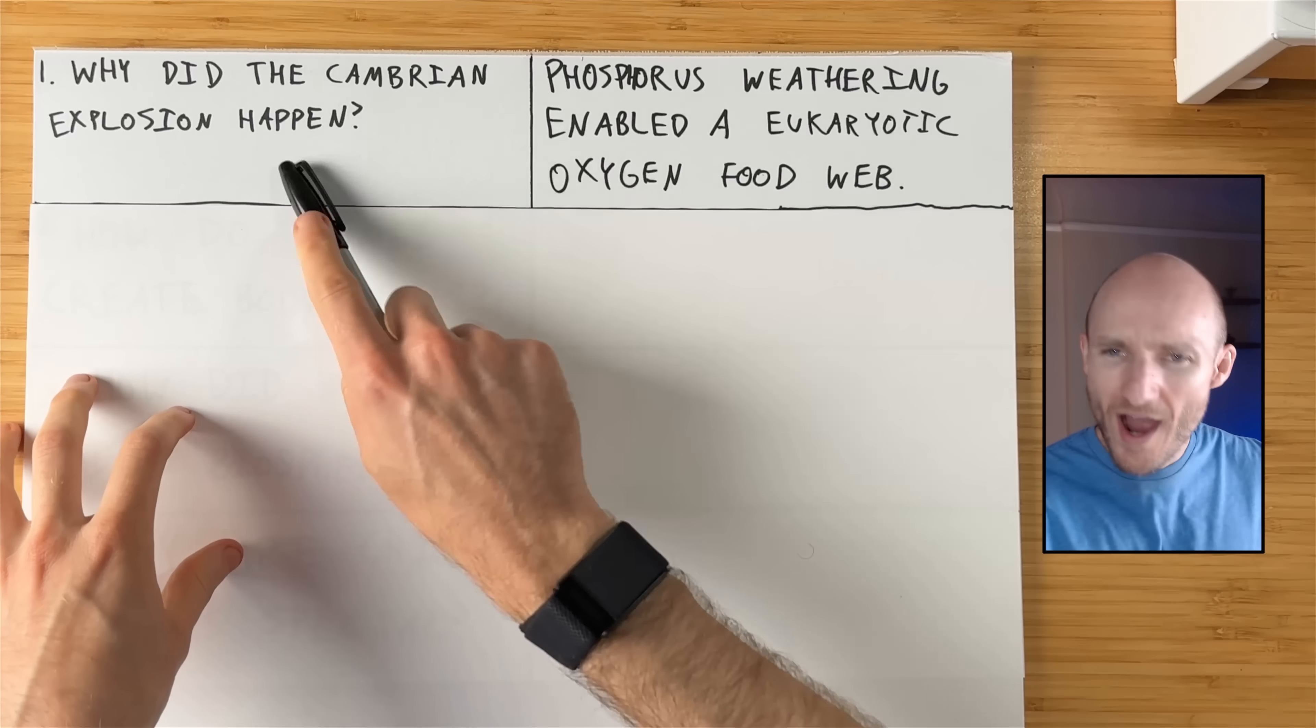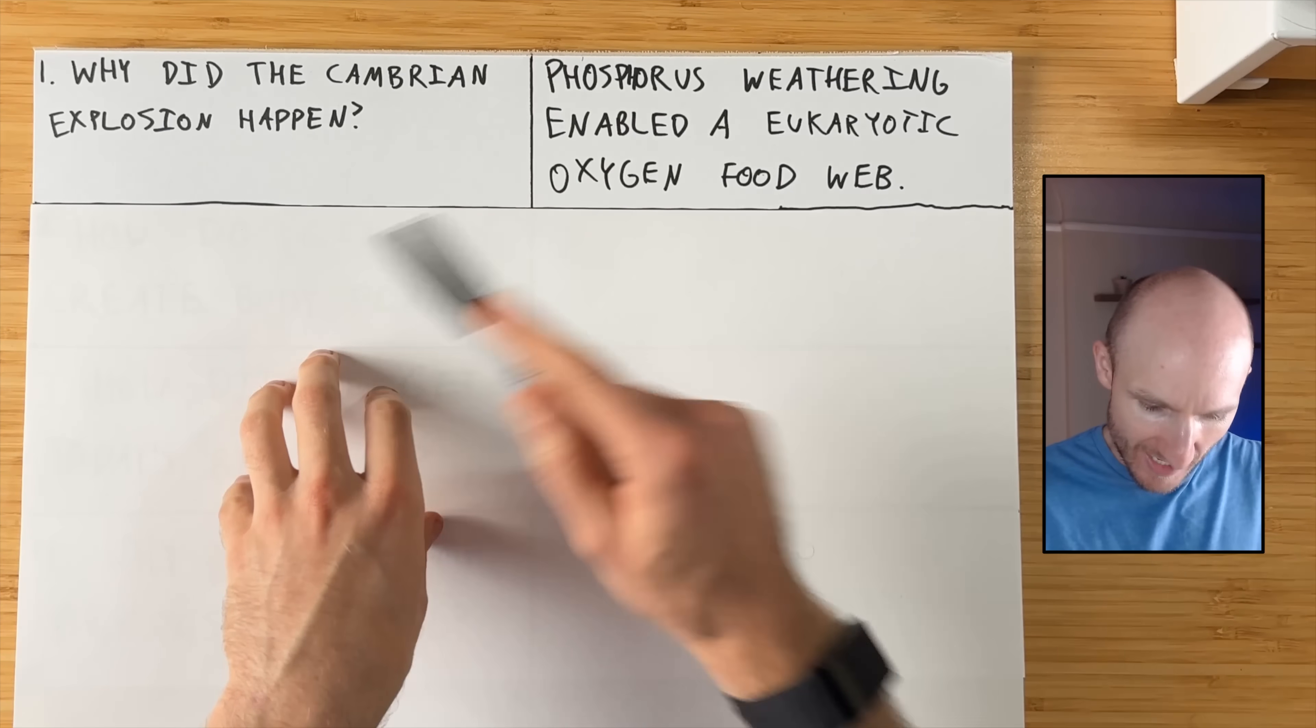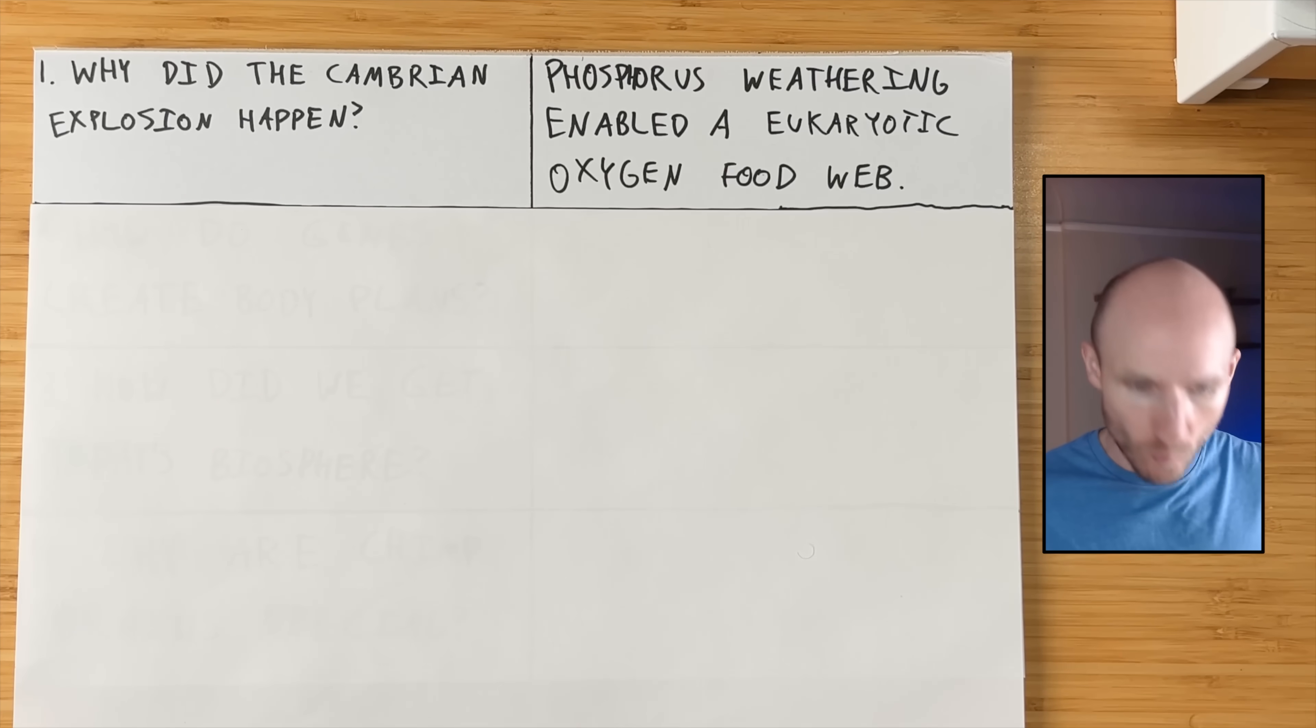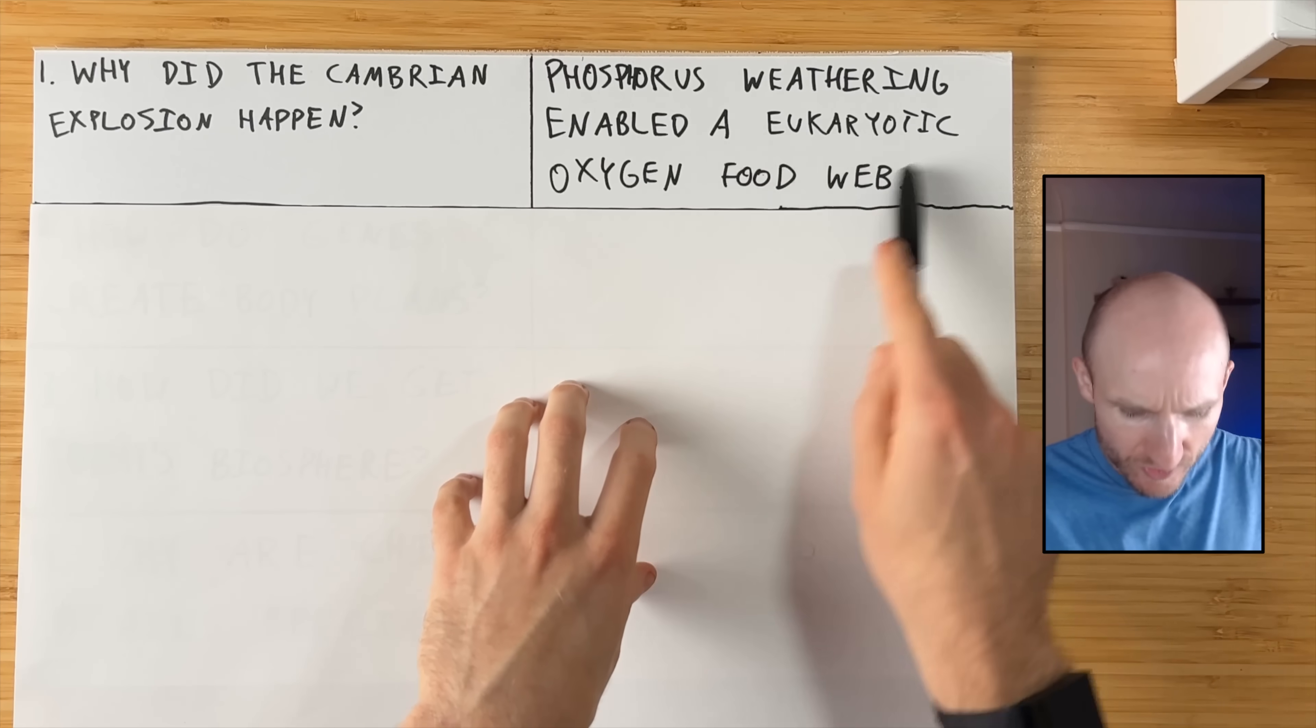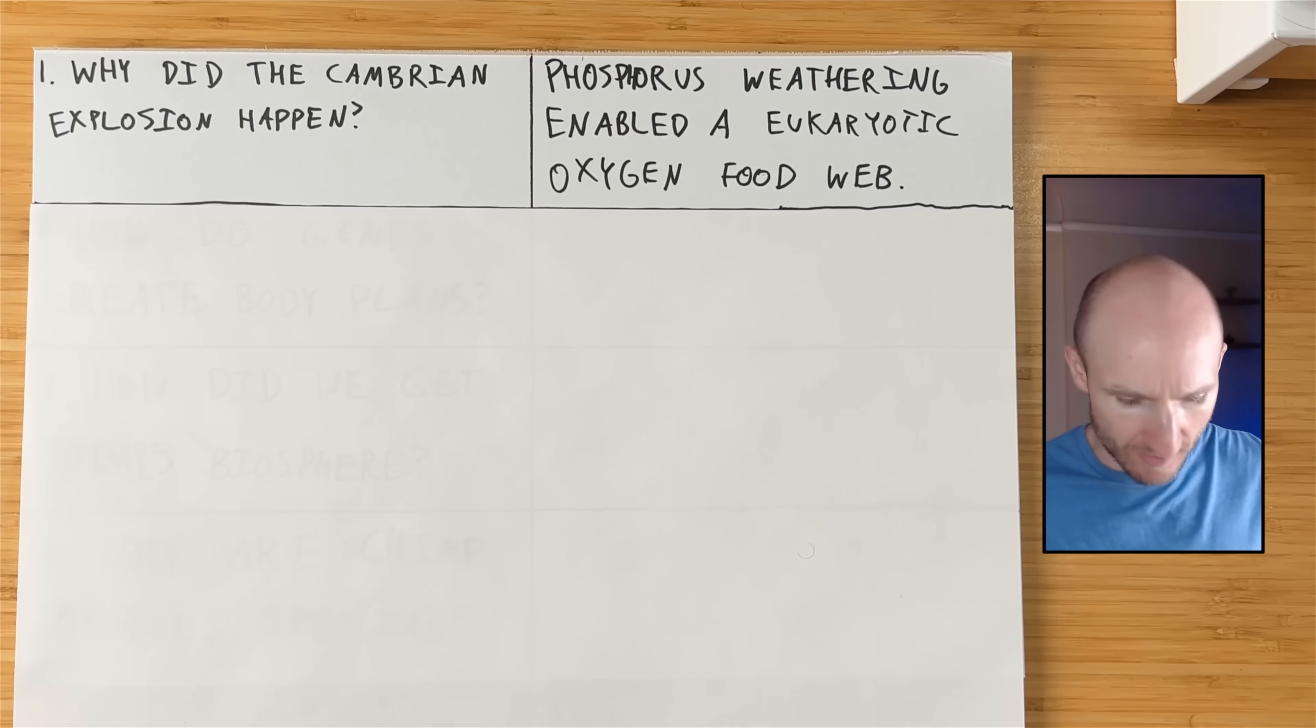Okay, this first question, why did the Cambrian Explosion happen? Why did we go from small life to big? Well, the answer is that phosphorus weathering enabled a eukaryotic oxygen food web. So there are two pieces to this. One piece is that it was the phosphorus weathering that enabled everything. And the second piece is what did it enable? It enabled this weird new eukaryotic oxygen food web. We're going to look at both pieces there.